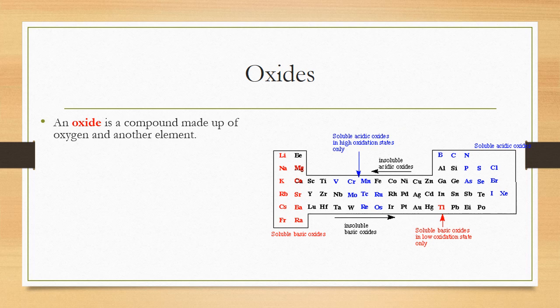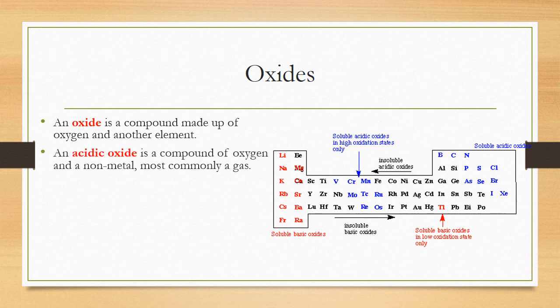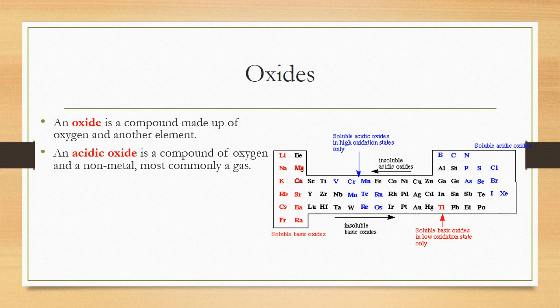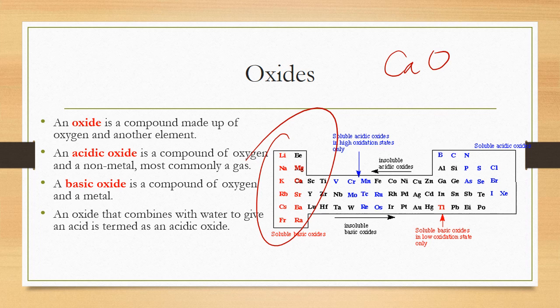An oxide is a compound made of oxygen and another element — for example, sodium oxide or nitrogen dioxide. Acidic oxides, like sulfur dioxide (shown in blue), react with water to form acids. Basic oxides, like calcium oxide (metals), react with water to form bases.